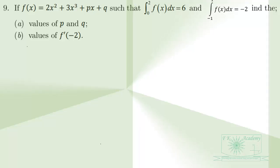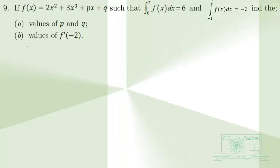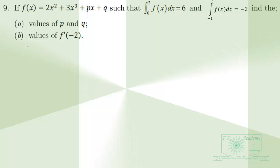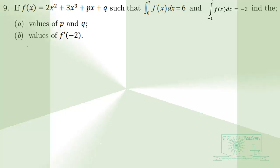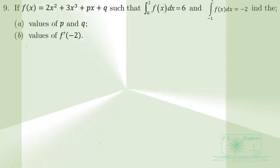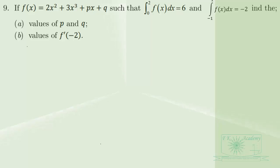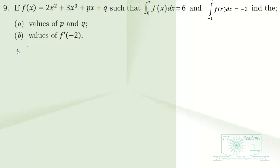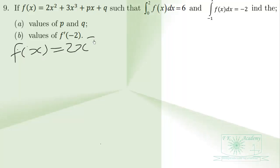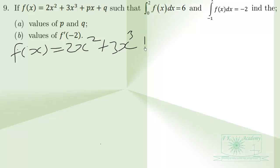Here we have the May-June YEC 2024 Elective Mathematics Paper 2, Question 9. If f of x equals 2x squared plus 3x cubed plus px plus q, such that the integral from 0 to 2 of f of x dx is equal to 6, and the integral from negative 1 to 1 of f of x dx is negative 2, we have to find the values of p and q, and the value of f prime of negative 2.